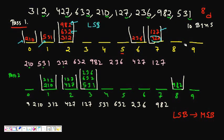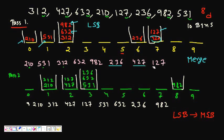Now we merge them back by going from bin 0 to bin 9. From bin 0: 210. From bin 1: 531. Multiple numbers in a bin are treated as a queue — first in, first out. So from bin 2: 312, then 632, then 982. Bins 3, 4, 5 are empty. From bin 6: 236. From bin 7: 427 then 127.